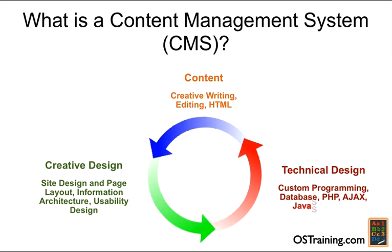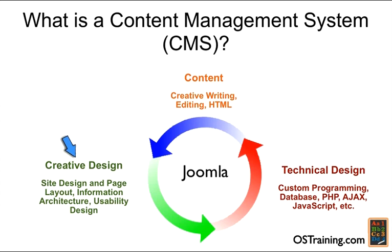The last thing that a content management system gives you is the technical design — the programming, the database, the PHP, Ajax, JavaScript — and this is what Joomla gives you as a package. Joomla creates all of the necessary code to produce the web pages that access your content and deliver it with your design. But all three of these things are separate. So when Joomla has an update, you don't have to worry about your content or your design because it's only the core files being updated. When you want to change your design, you don't have to physically change any code in Joomla. Similarly, when you want to change your content, you don't need to change your design. Joomla picks up the new content you've entered and creates brand new pages each time somebody loads your website.